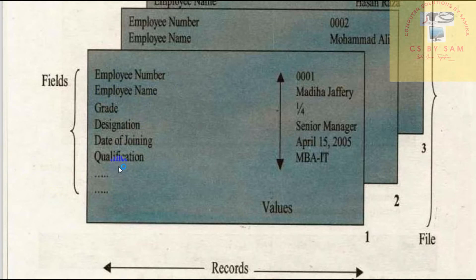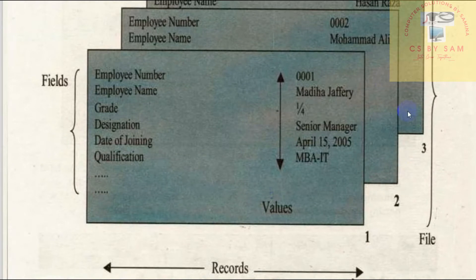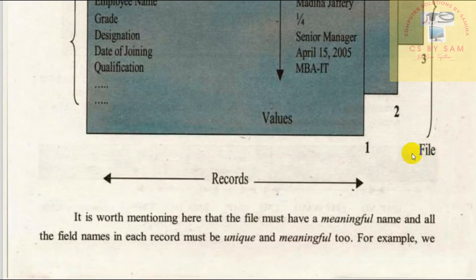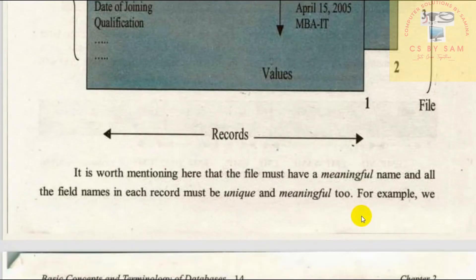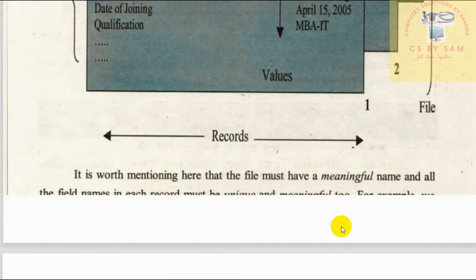Fields are values. When they have a combination of related fields, they form a record — a first employee, second employee, third employee. When they have related records, they form a file. We have covered this in detail in a previous lecture.